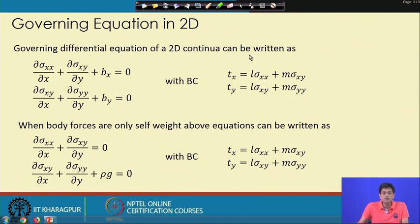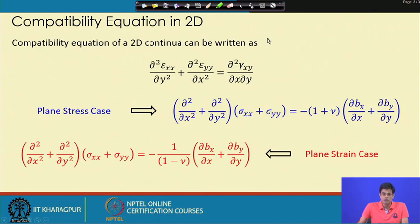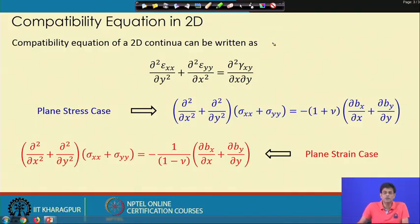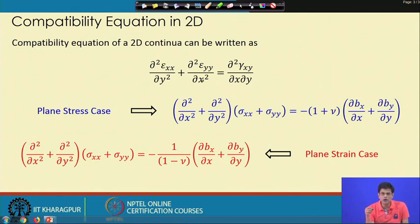We also know from previous lectures the compatibility equations, which we will be using here. The compatibility equation for a two-dimensional body is: ∂²εxx/∂y² + ∂²εyy/∂x² = ∂²γxy/∂x∂y.